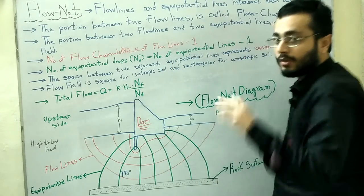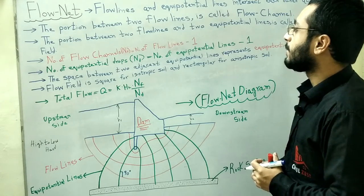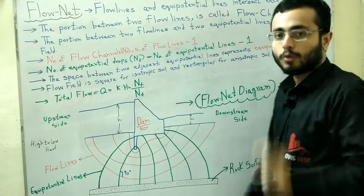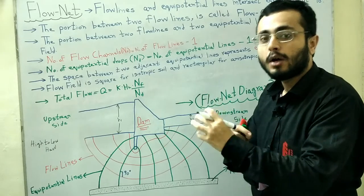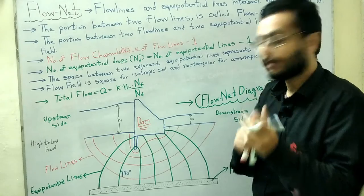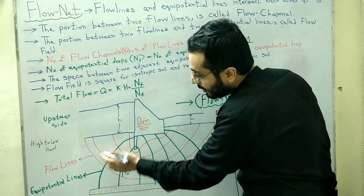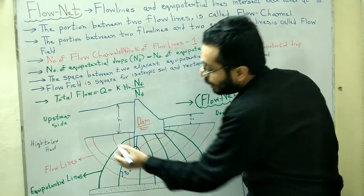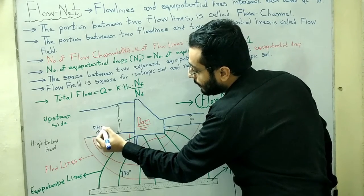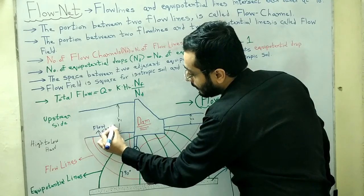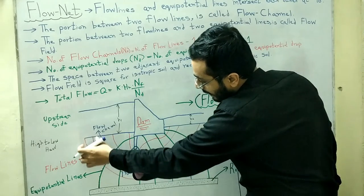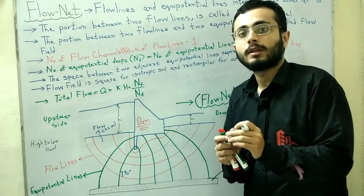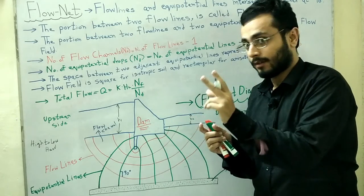The portion between two flow lines is called a flow channel. The space or area between two successive or adjacent flow lines is called a flow channel. So the space between two adjacent flow lines forms one complete flow channel throughout the flow net diagram.